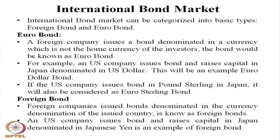If a US company issues a bond in pound sterling in the Japanese market, it will be a euro sterling bond, because pound sterling is the currency raised by the US company in the Japanese market. Similarly, if a US company raises a bond in US dollars in the Japanese market, it will be a euro dollar bond.